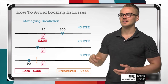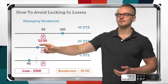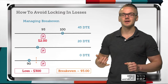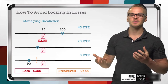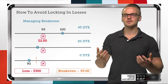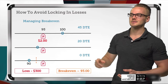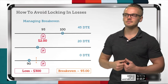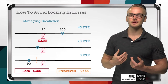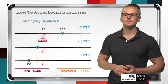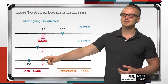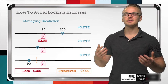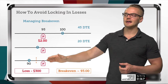Let's say the trade goes against us. Over 25 days, the stock drops from $100 to around $93.50. At this point I need to consider my options: close the trade for a potential loss, roll it out in time, or accept assignment. If I'm comfortable owning shares at $95 and I factor in the $2 premium I collected, my break-even is reduced. At expiration, let's say the stock continues to drop to $90.